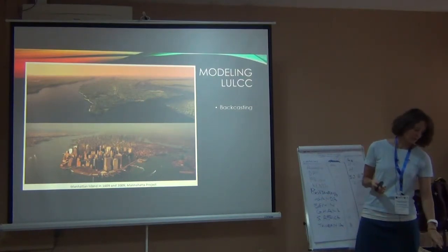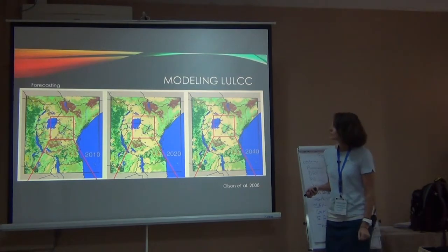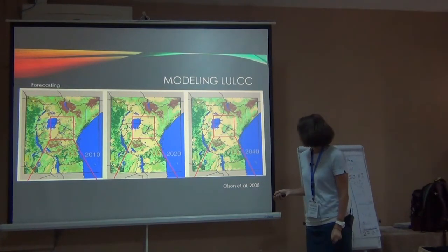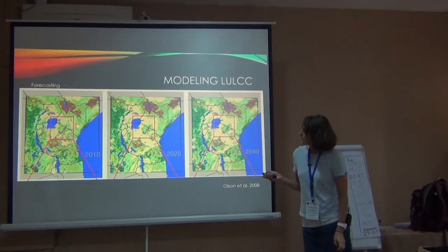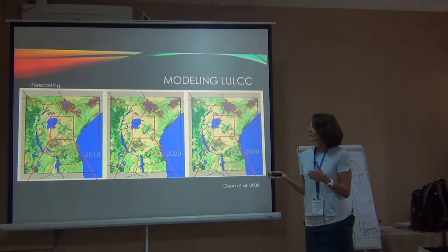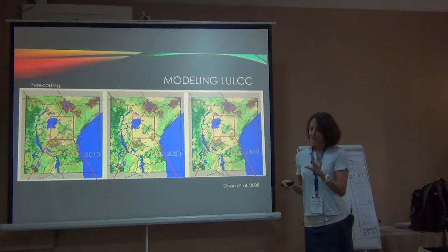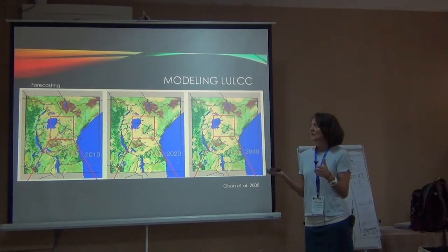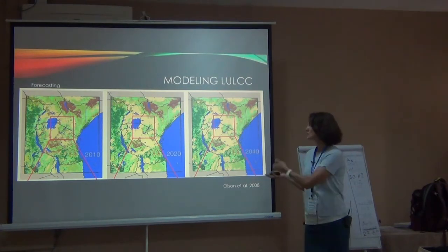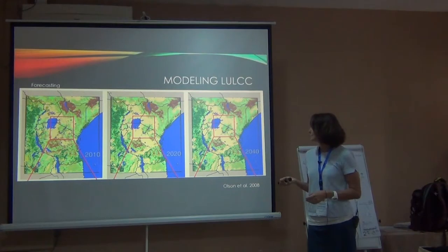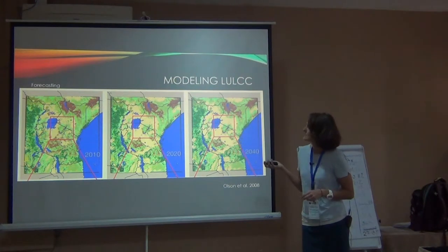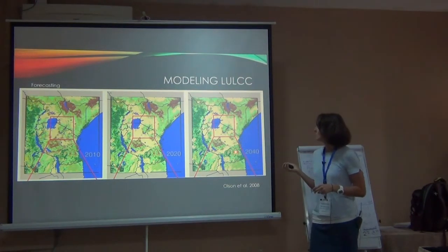Here's an example of forecasting from East Africa — a paper by Jennifer Olson et al. They looked at land use land cover change around 2000, 2005, and 2010, trained a model to replicate those as best they could, then set the model forward in time. The big trend in these images is the expansion of agriculture throughout the region.